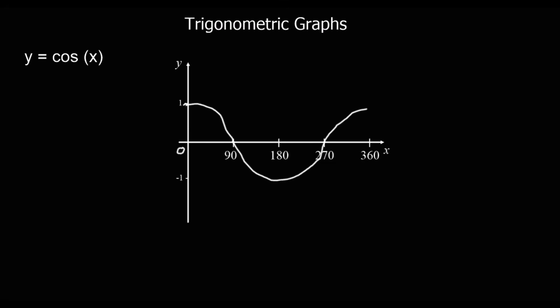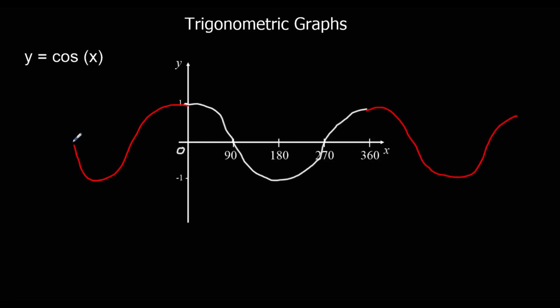Like the sine graph, the cosine graph repeats every 360 degrees. This exact pattern that we've drawn repeats — we have that exact pattern again for the next 360 degrees, and we've got the same pattern going backwards for 360 degrees.